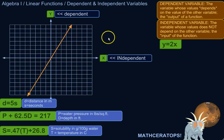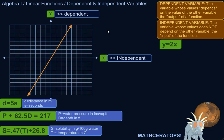We're going to practice identifying what the dependent and independent variables are in linear equations. But first I want to look at dependent and independent variables in some concrete situations, just to make the concept more intuitive, and then we'll kind of work backwards from there.